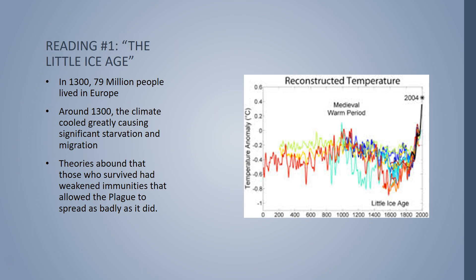In 1300, there were 79 million people living in Europe, and temperatures dropped. If you were already in a very cold climate or higher elevation, it was virtually impossible to grow food, and it caused starvation on a scale that Europe had not seen. There are theories that those who did survive were so weak and their nutrition so poor that when the plague swept through Europe, they were in a weakened state, which caused a third of the population to die. The Ice Age changed Europe climate-wise and lessened immune systems.